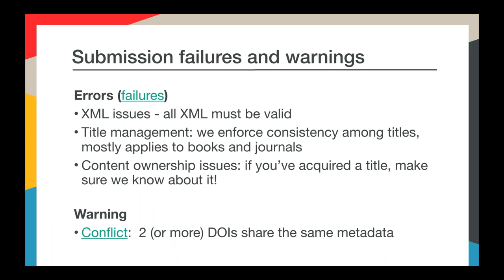Submissions do fail. There are some odd problems you might run into, but most failures fall into three categories. Number one: your XML is not valid. We only accept XML that parses, so if your XML is invalid the entire submission is rejected outright. We also have some validation done on our system side outside of the XML. We make sure that the ISSN and ISBN you submit in your files are valid. Your files might also fail because of an issue with your title — we have some rules for updating titles and don't allow you to change your journal title on the fly.